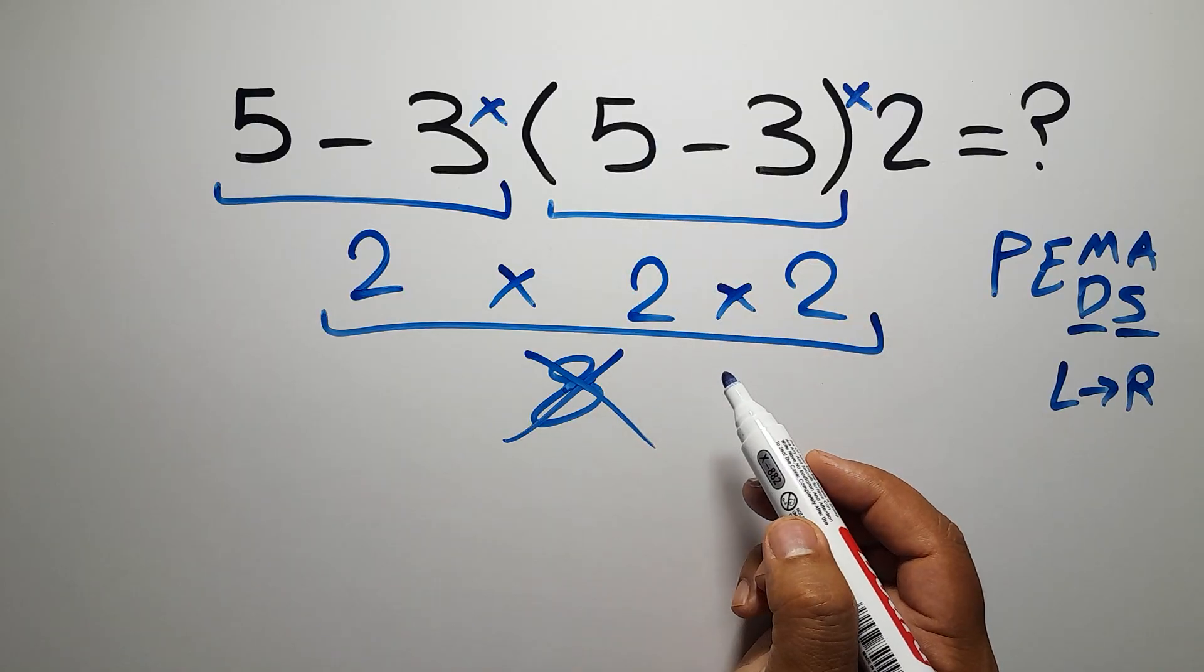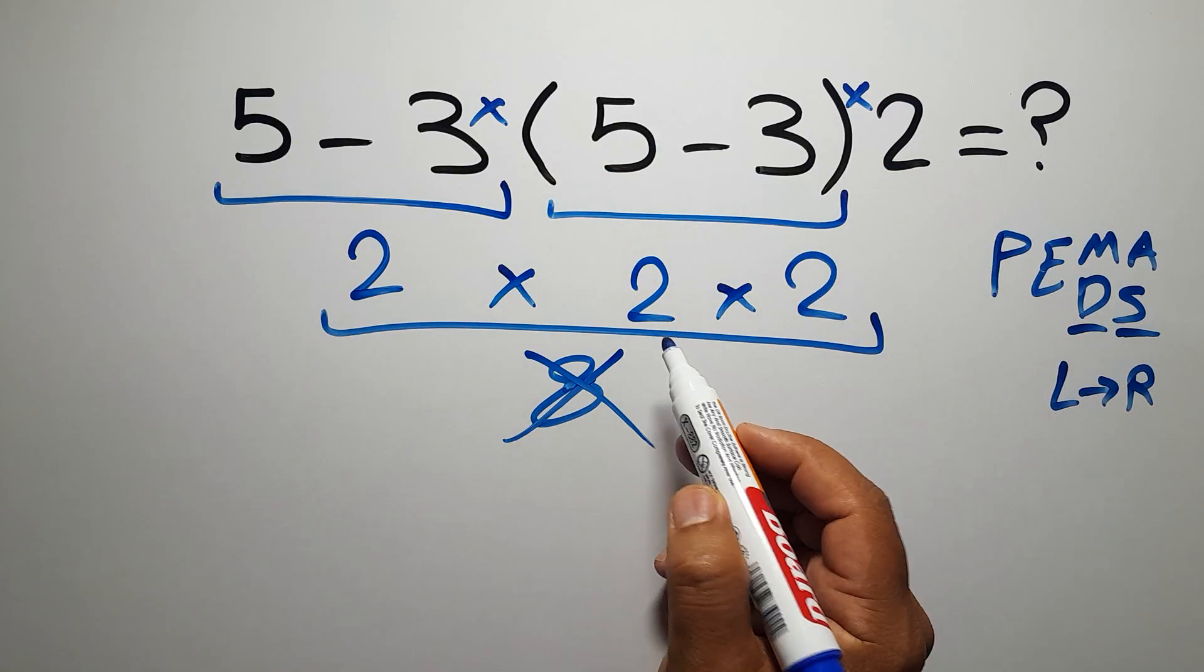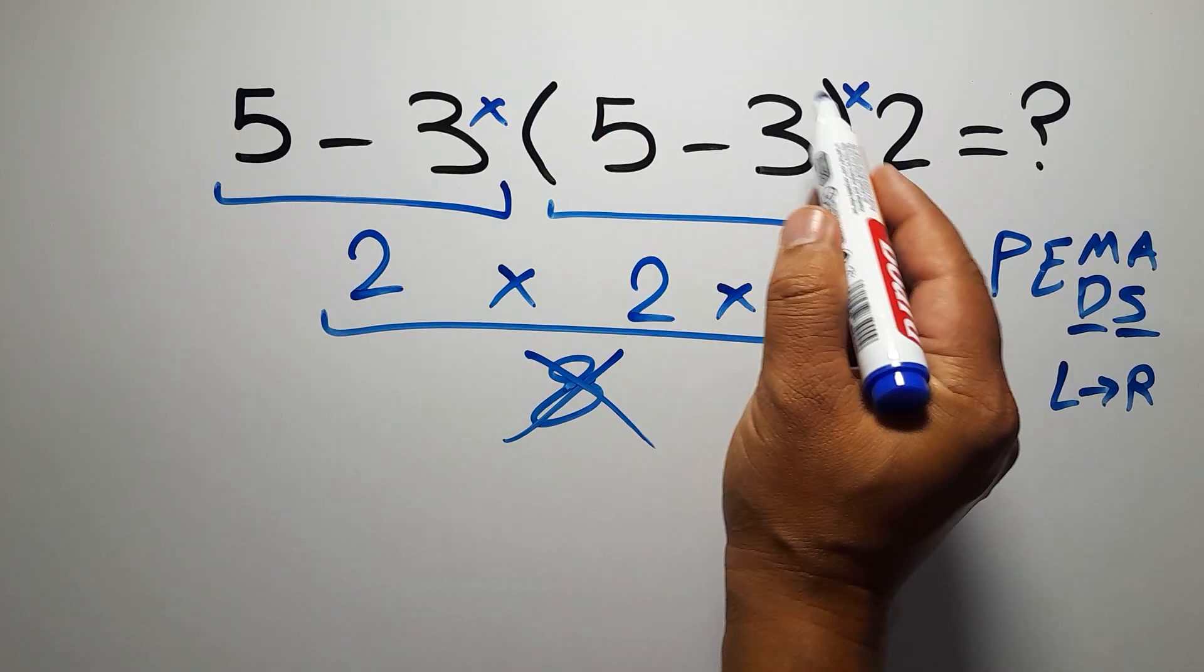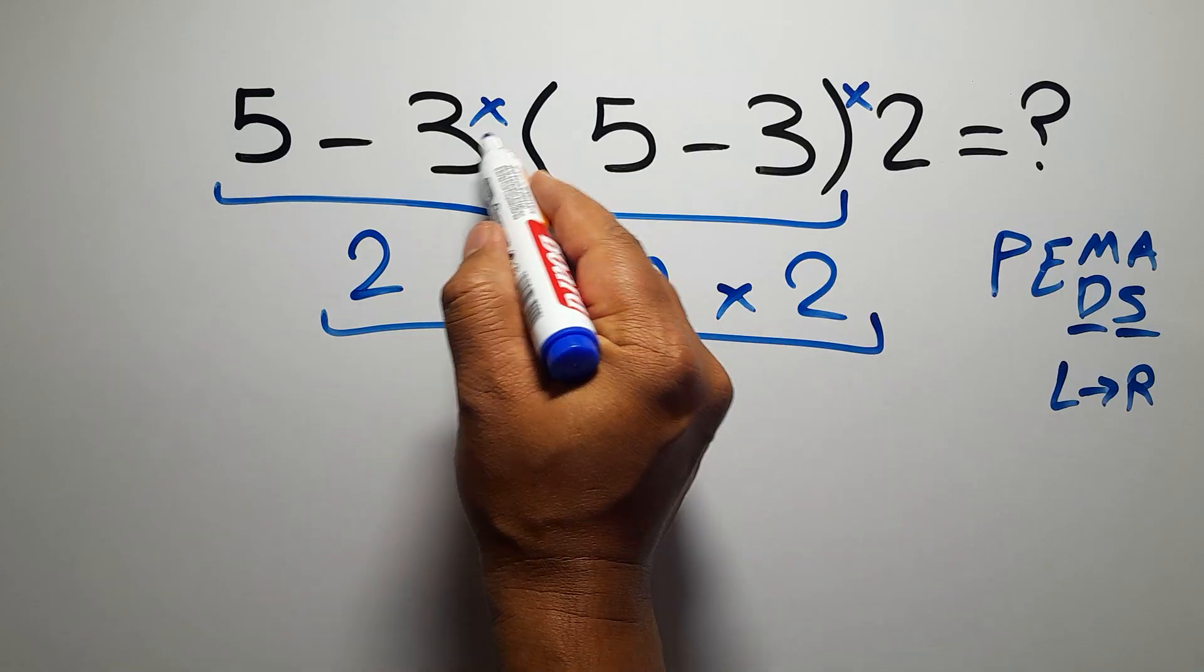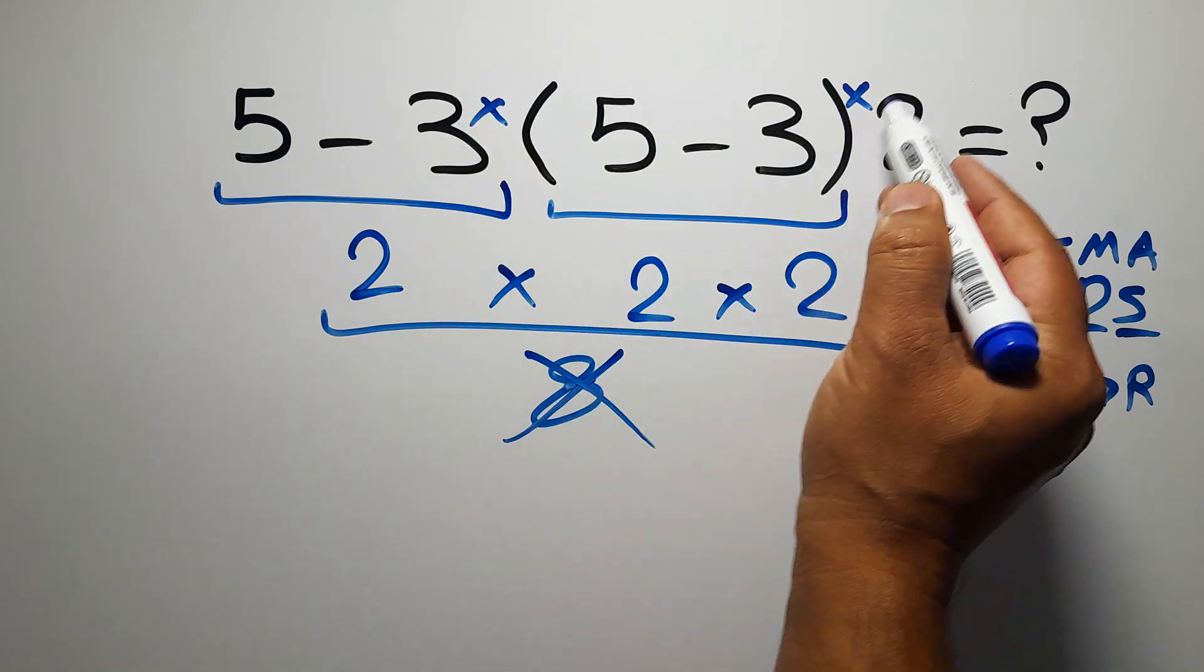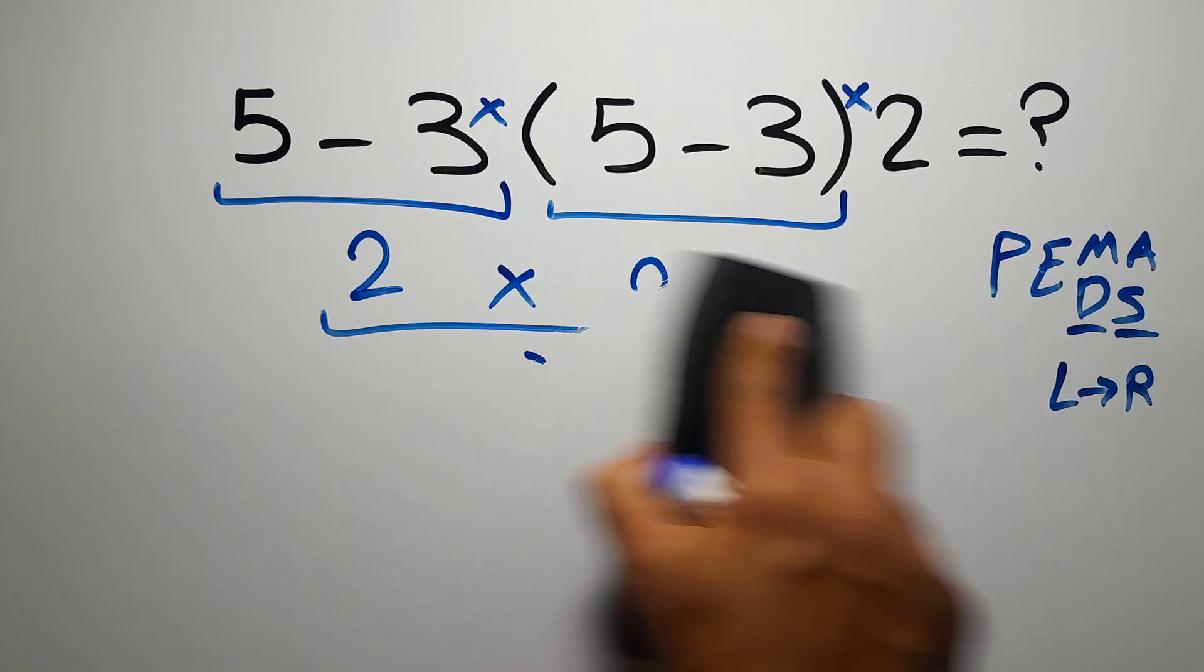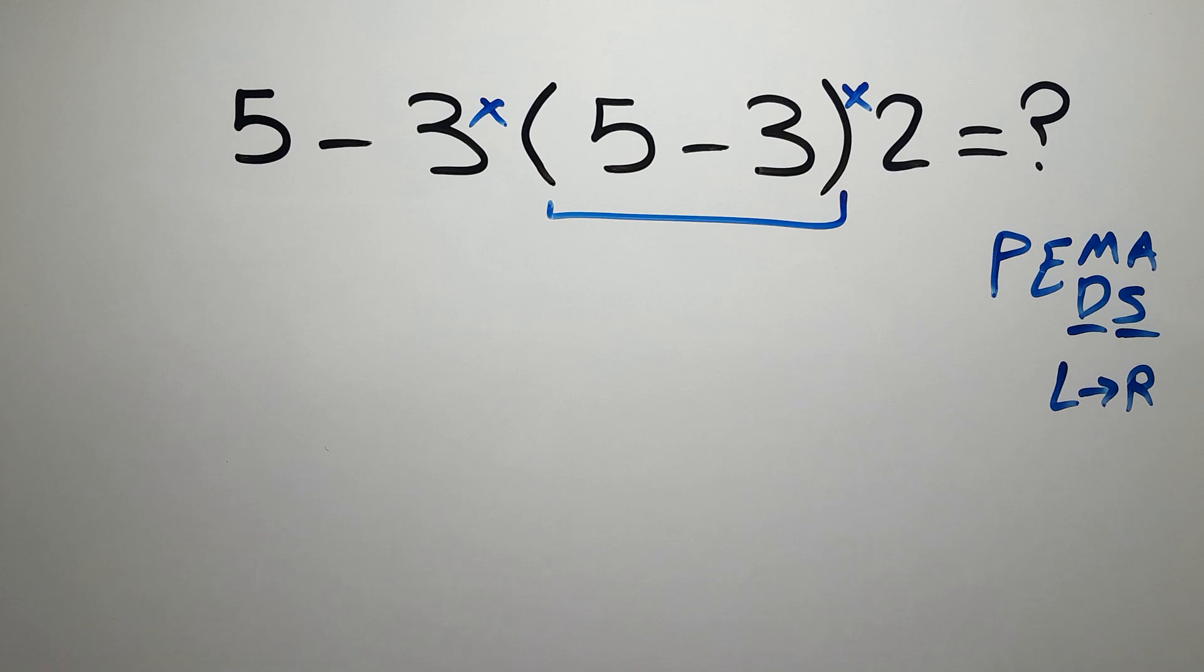Okay, according to the PEMDAS, first we have to do this parentheses, not this subtraction. So first this parentheses, and after this parentheses we have to do this multiplication, then this multiplication, and finally this subtraction.